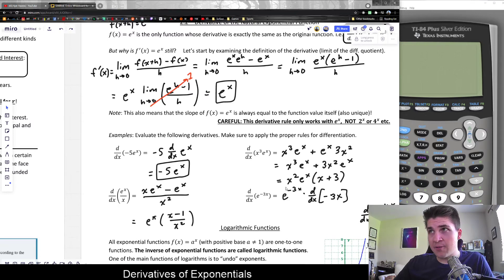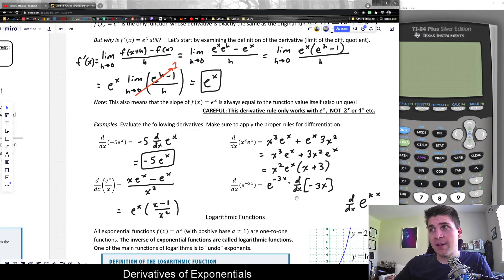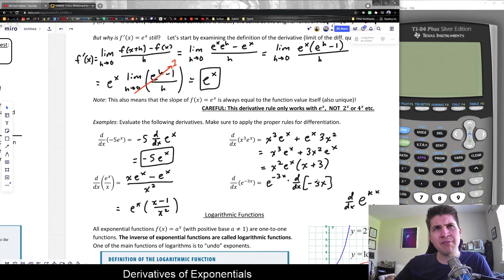To do that, you always take the derivative of the outside first, then multiply by the derivative of the inside. And the derivative of negative 3x, the derivative of x is just 1. So this would just be negative 3 times 1 or negative 3. And what we get is e to the negative 3x times negative 3 or negative 3e to the negative 3x.